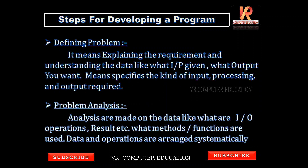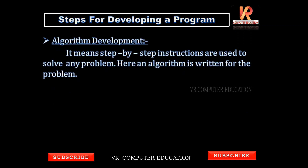Step two: Problem analysis. After you state your requirements, analysis is made on the data — what input and output operations are needed, what results are expected, and what methods and functions are used. The programmer analyzes: this person wants this input, this output, and results displayed this way. The data and operations are arranged systematically. That is problem analysis.